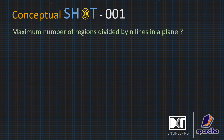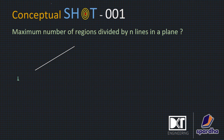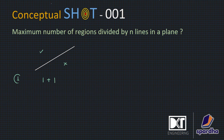Let us understand this complete concept. Initially we don't have any line, so the region count is one — this is one complete region we have. Now if we have one line here, this first line creates one more region. You can see that one region is on this side and the second region is on the other side. Now let us bring one more line.